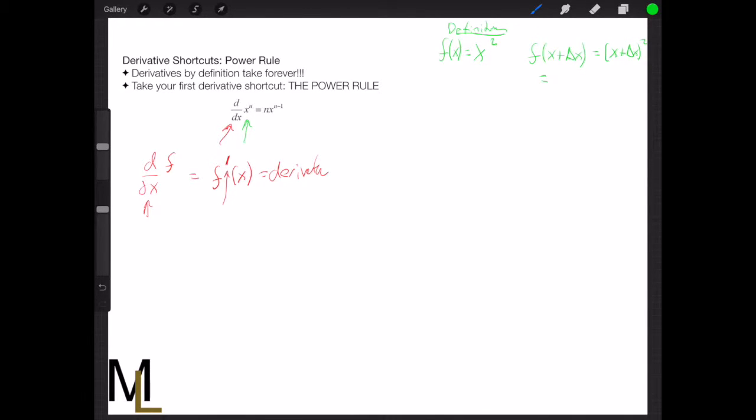Well, that's going to be x plus delta x quantity squared. And when we multiply that out, it's going to be equal to x squared plus 2x delta x plus delta x squared, and f of x will just be x squared.